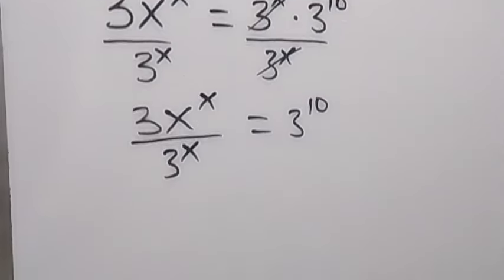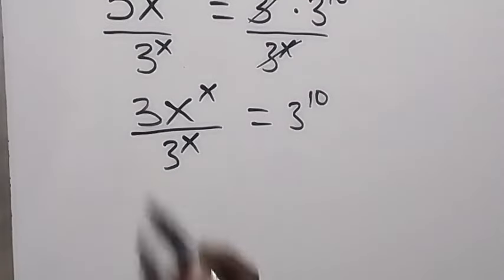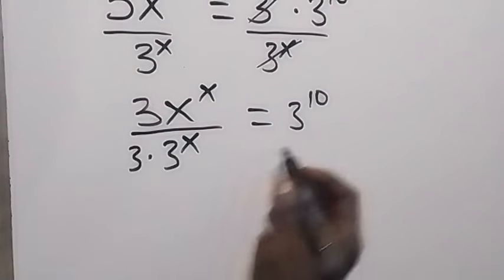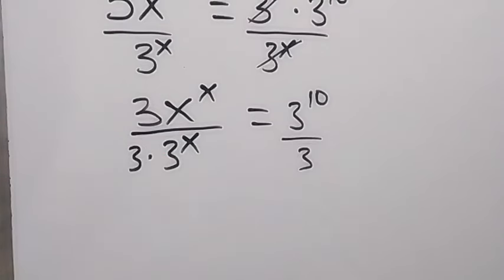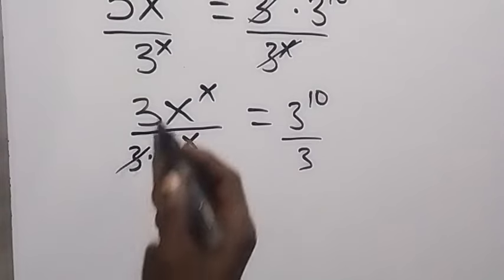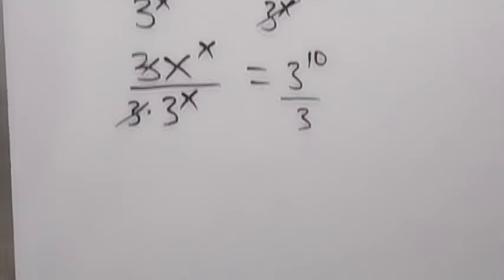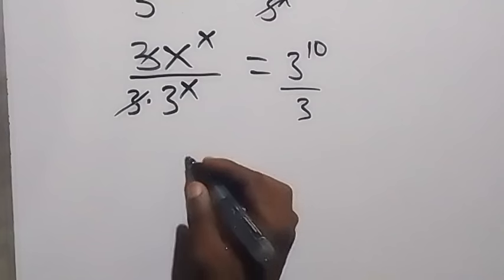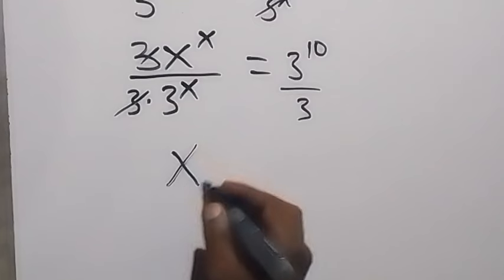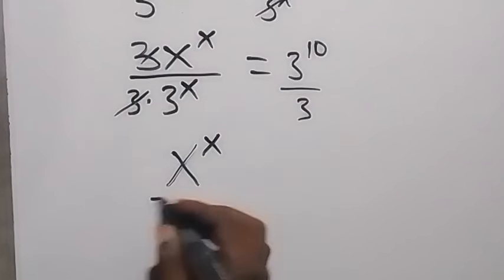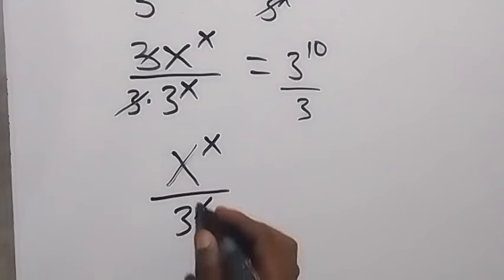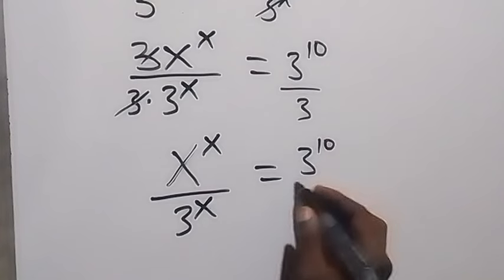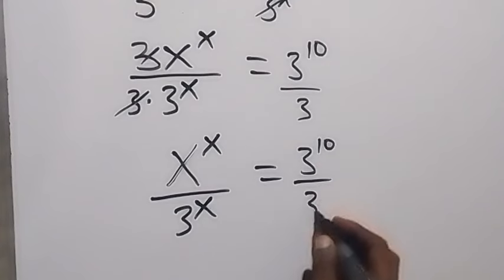In the next step, let's remove this 3 on this side. We divide both sides by 3, so that 3 cancels here, and what we have left now will be x raised to power x over 3 raised to power x, which equals 3 raised to power 10 over 3 raised to power 1.